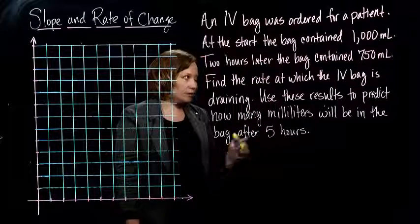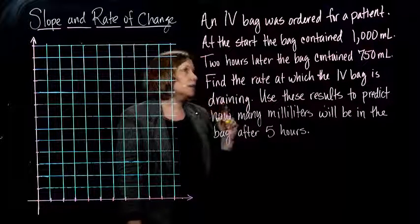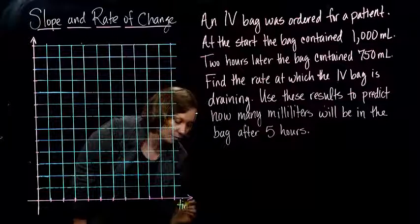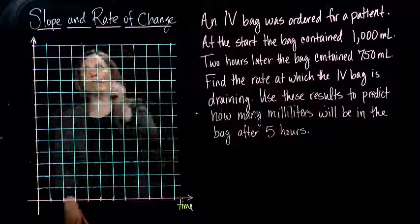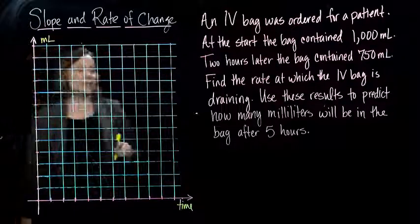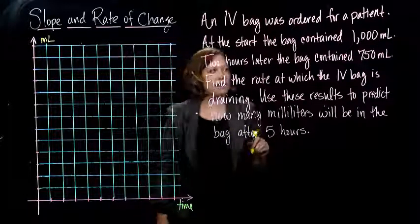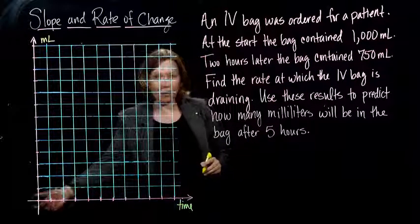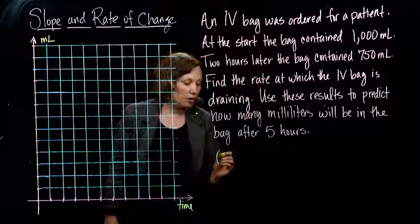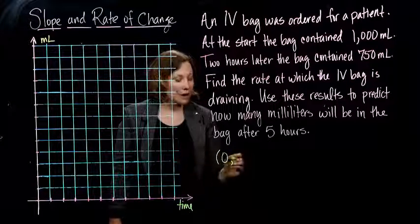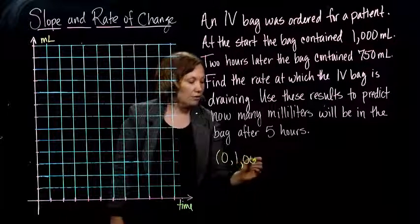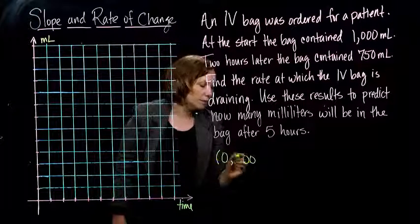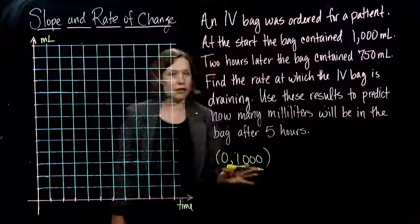So let's start out with figuring out what we have here. So if we're looking at time on the horizontal axis and milliliters that are left in the IV bag on the vertical axis, that means when we start, that means where are we at in time? We're at zero. So when time is zero, we have 1,000 milliliters in our bag.